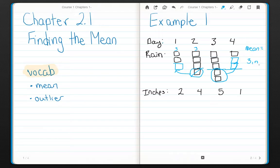Now the other way to do this is to use a number sentence. I'm going to add each of the inches together. 2 plus 4 plus 5 plus 1. And then I'm going to divide by the number of data sets, which is 1, 2, 3, 4.